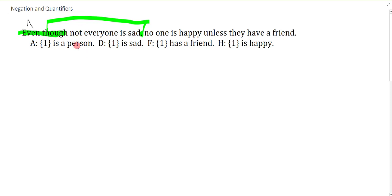So if I ignore the not, you can just symbolize everyone is sad. And then you get, for all things, if you're a person, then you are sad. Now at this point, to make it not everyone is sad, you just have to ask where the negation goes.